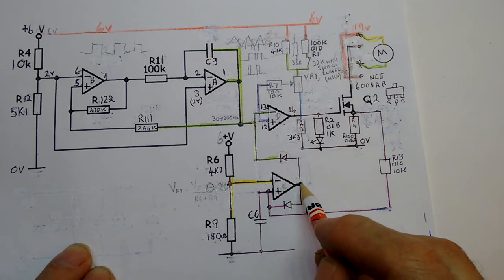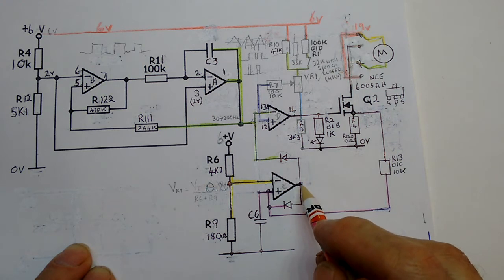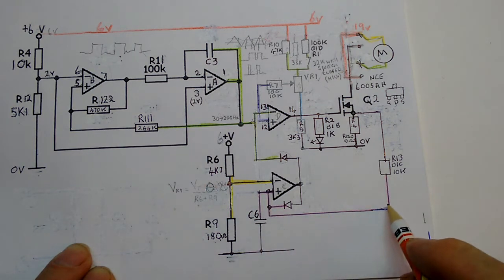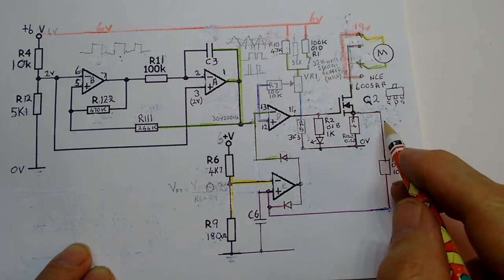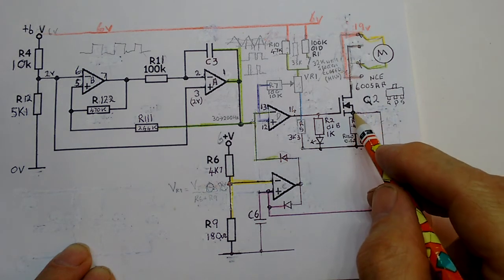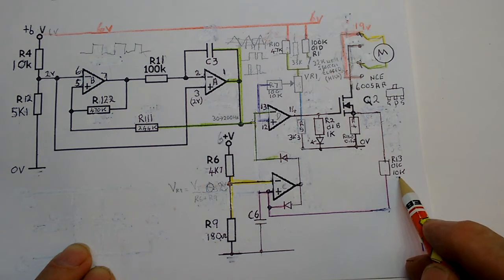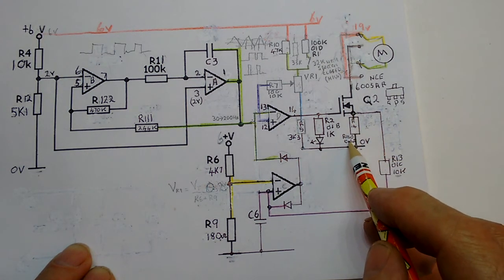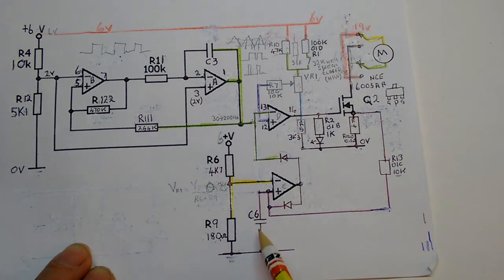C6 will discharge by going through this resistor here, round and through this resistor here. So this is a 10k resistor. This 10k means that the C6, depending upon the size of C6 which I don't know, it will take time to turn off. So essentially I think that's the circuit for this.